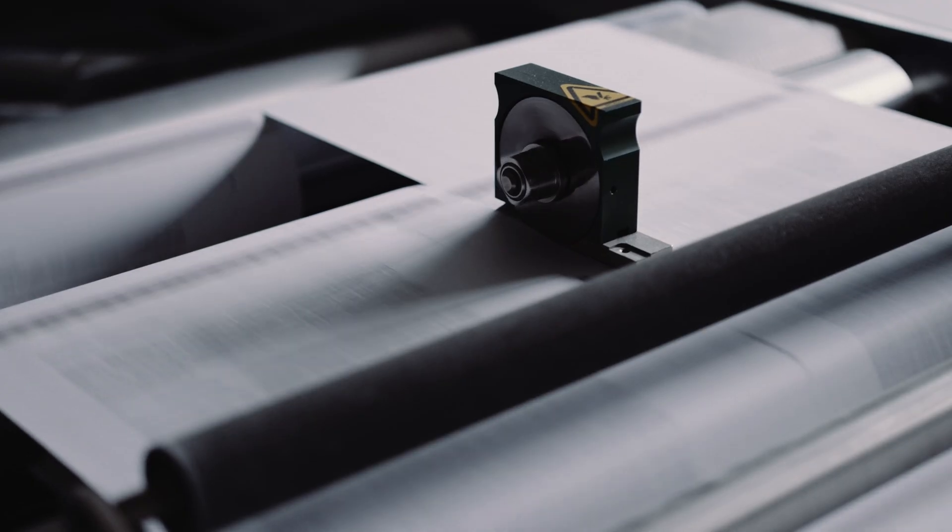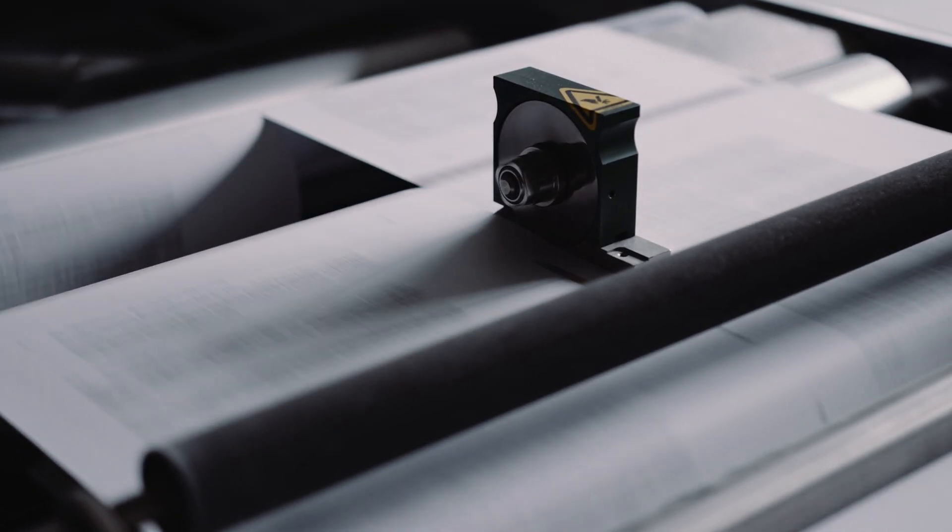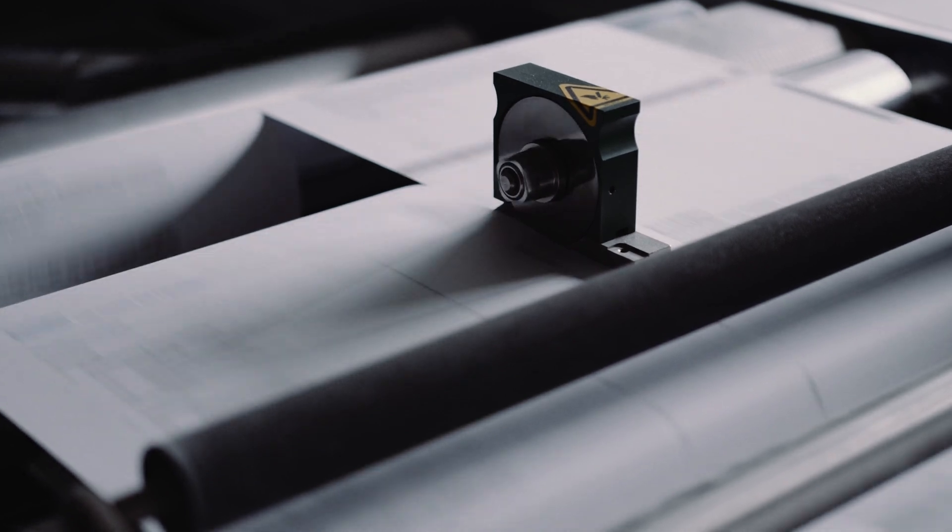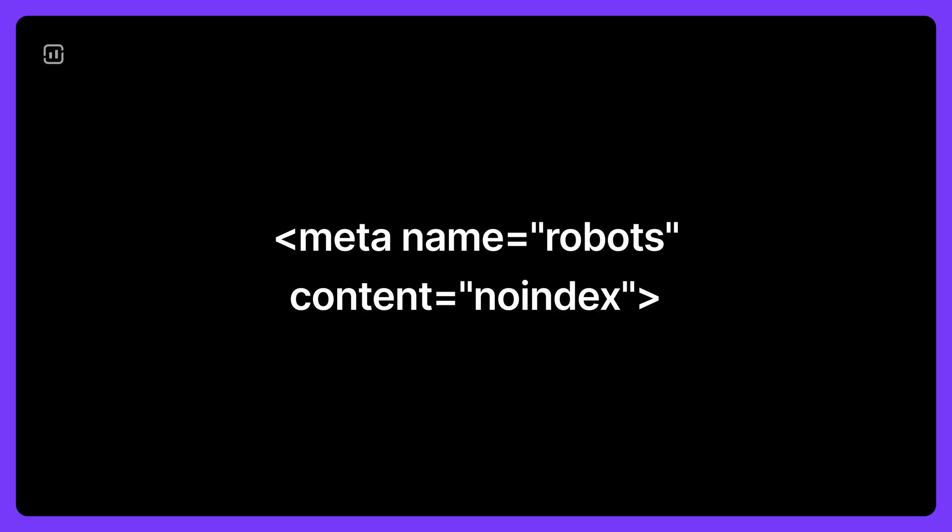Don't hesitate to file a DMCA takedown for copied content. If your website has a lot of printable content in the form of PDFs, you can face duplicate content issues as well. A super simple solution would be to not index those pages — insert this meta tag into the head section of your page to prevent all search engines that support the noindex rule from indexing a page on your site.